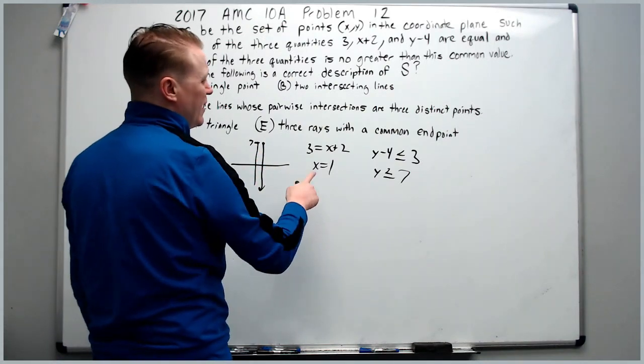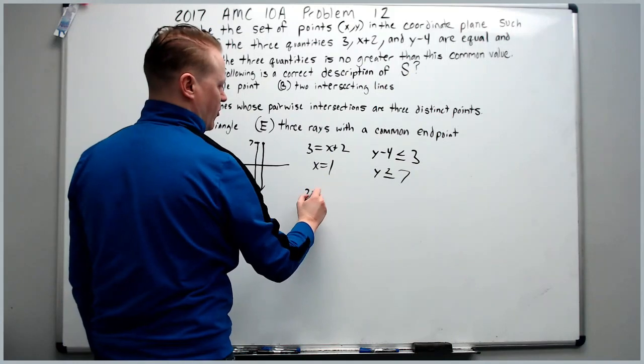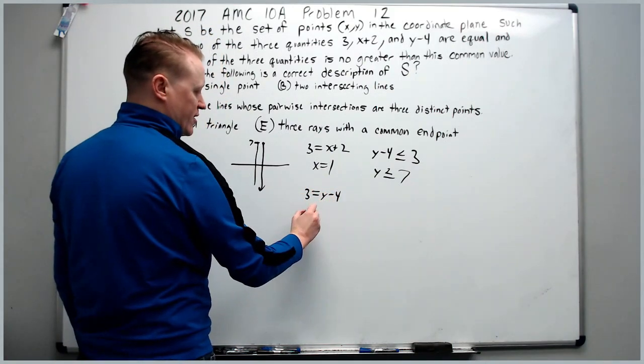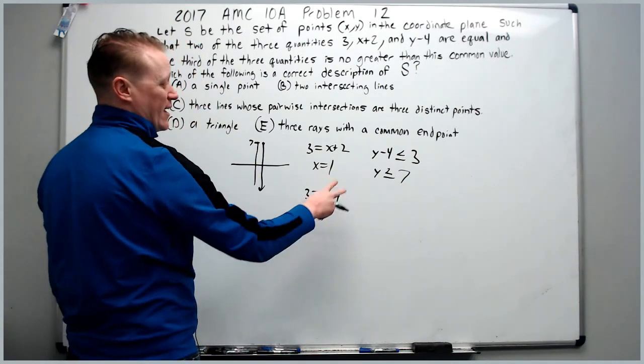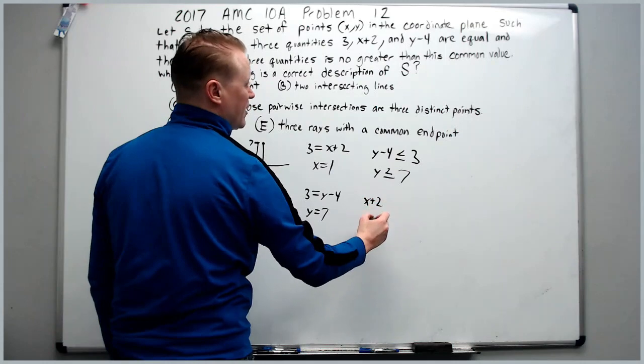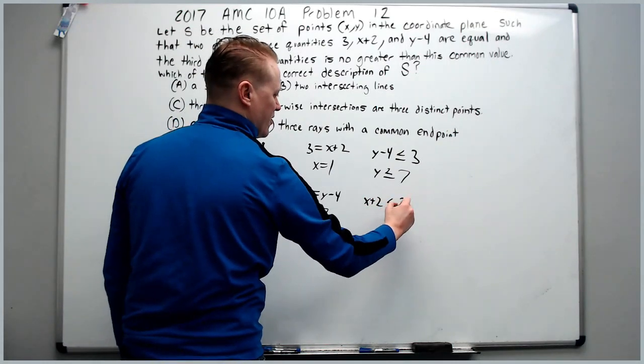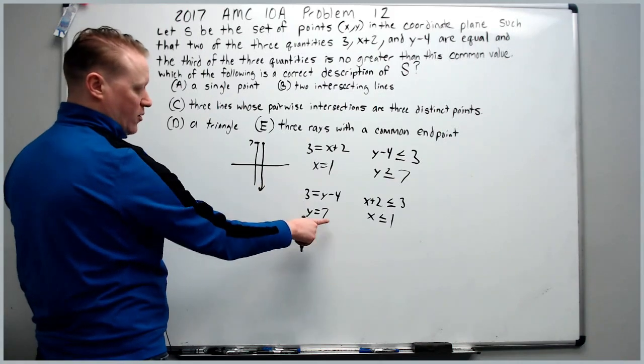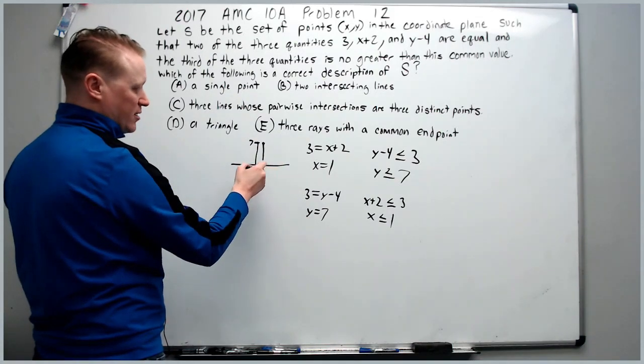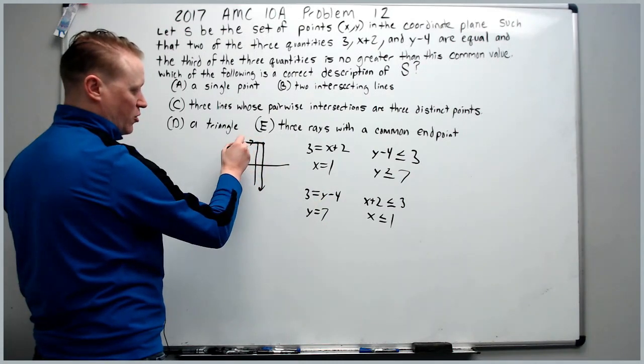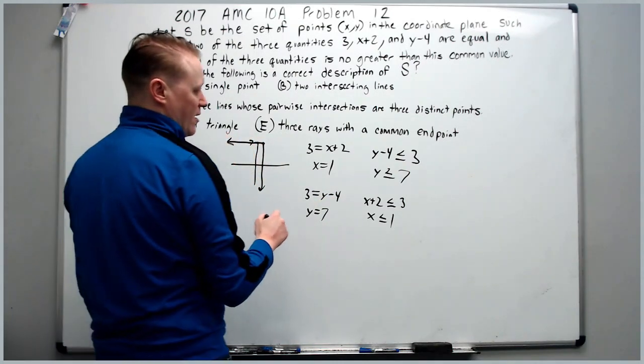Next, let's do 3 equal to y-4 because these two are easier. Move 4 over to get y=7. And again, the third expression, which is the one we didn't use, x+2, is less than or equal to 3, which means x ≤ 1. y=7 is a horizontal line. I start here. I have a domain restriction. I have to go only back this way.